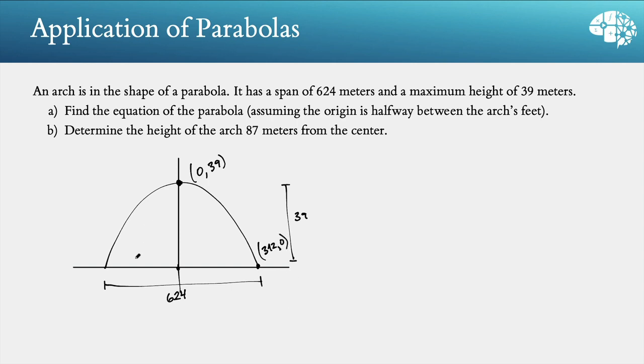So we have this parabola, and we can write the equation by using our standard form. x minus h squared equals 4p times y minus k. Now we have h and k because that's just the x and y-coordinates of the vertex. And so we have x squared, h is 0, equals 4p times y minus the y-value there, which is 39.